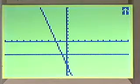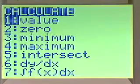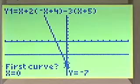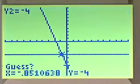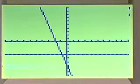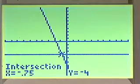We'll first find the intersection point. Intersect, first curve, second curve, guess. And we see that that is negative 0.75. That's the negative 3 fourths solution, part of the solution we had before.